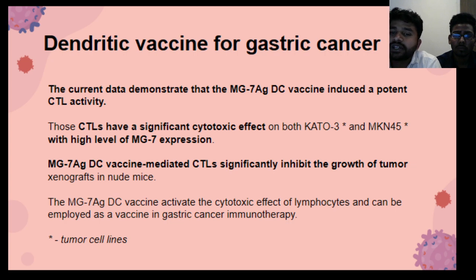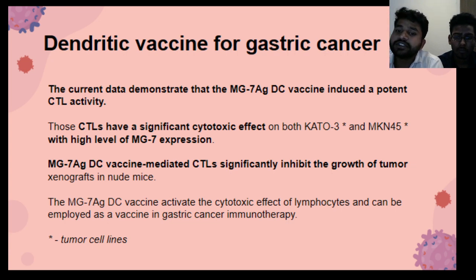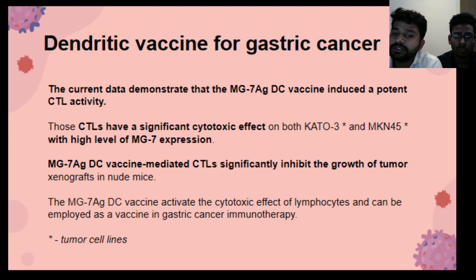Current data demonstrate that the MG7-Ag dendritic cell vaccine induces potent CTL activity. This CTL has a significant cytotoxic effect on both KATO-3 and MKN45 cell lines with high levels of MG7 expression. The MG7-Ag dendritic cell vaccine-mediated CTL significantly inhibited the growth of tumors.